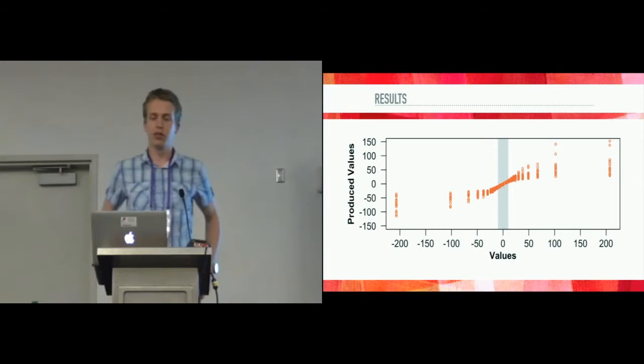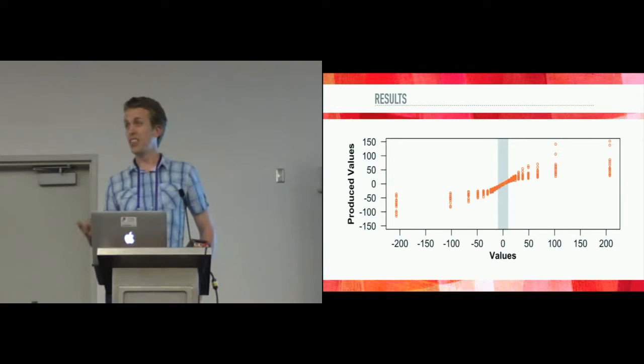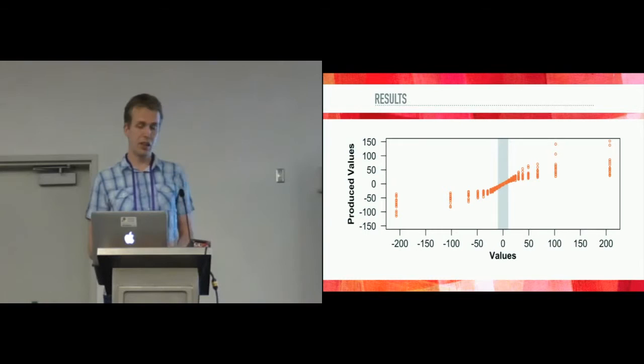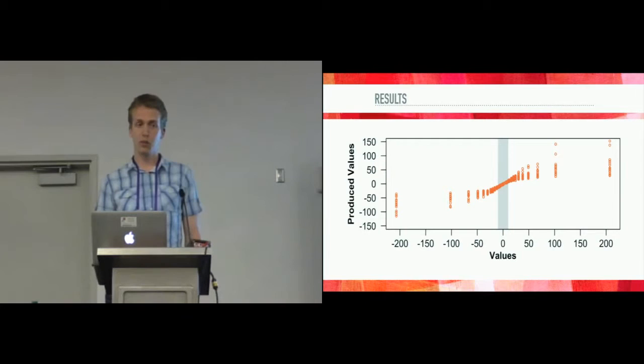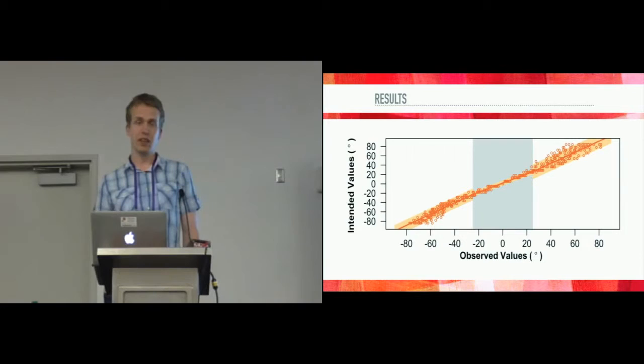This plot shows the mean pointing value per task per participant. The x-axis represents the values that people were presented. In essence, the number that they have to point to. And the y-value shows the value that they actually produced if the computer did the extrapolation for them, right? As we can see, there's actually quite a bit of uncertainty associated with this off-screen pointing. That's also expected, of course, because people had no feedback to what they were doing out there. But we also see that it gets very uncertain quite fast. And we also see that the undershooting behavior that we hypothesized was there, is actually there. The curve flattens as you go further away from the display. Meaning that people, on average, undershot the target they intended to hit.